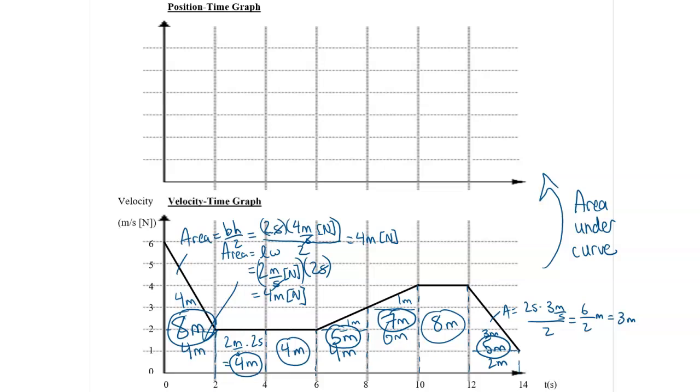So now what we need to do is we need to find the total area because we need to figure out the scale on the position-time graph before we can actually graph this. Otherwise it usually won't fit if we just use some scale that we just guess about. So we're adding up eight plus four plus four plus five plus seven plus eight plus five, and when we add those all together we get 41 meters total.